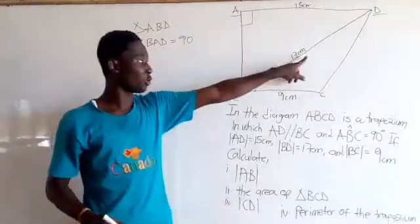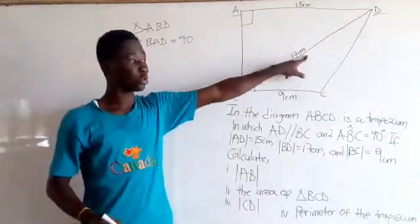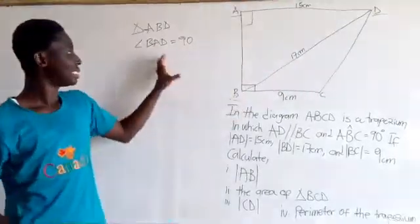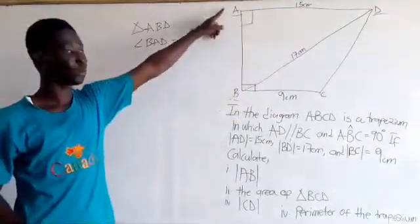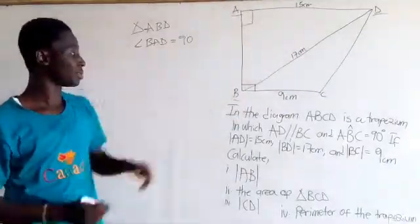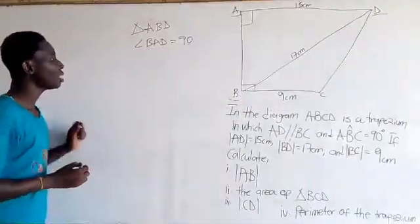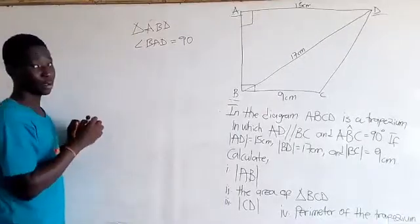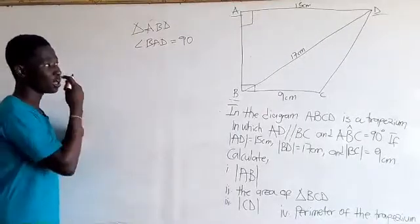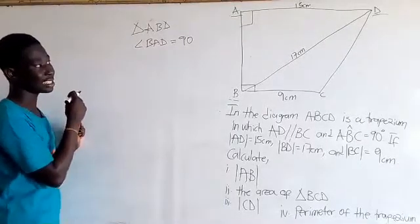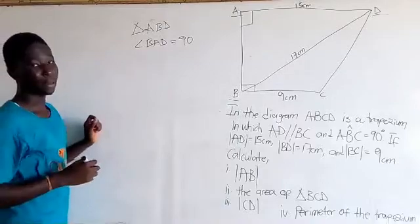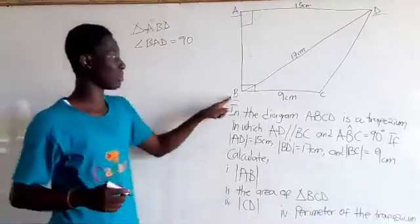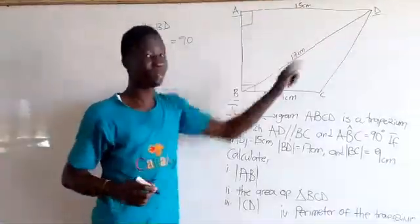We know two sides of the triangle, so we can find the side AB. Now we are using the Pythagoras theorem, which states that the hypotenuse is the longest side.